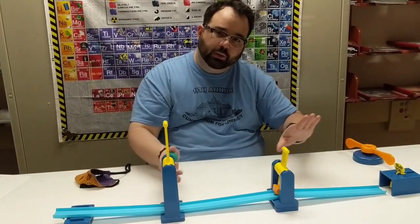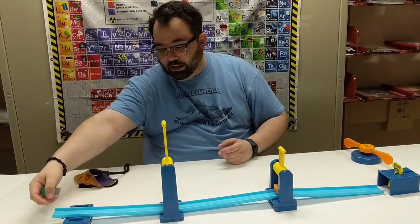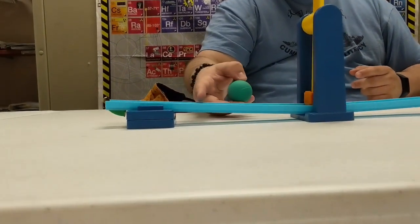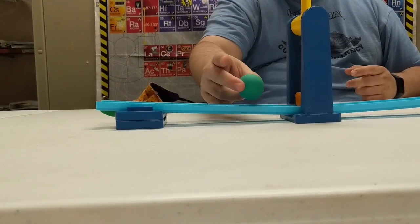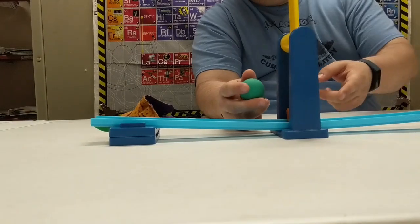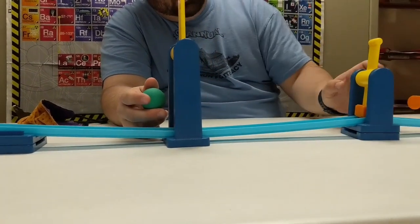There's a couple different things going on with this. First of all, as the ball is moving down this ramp here, because it's angled downwards, the ball is actually picking up velocity, picking up speed. But as it goes over here, it has to go up a ramp.